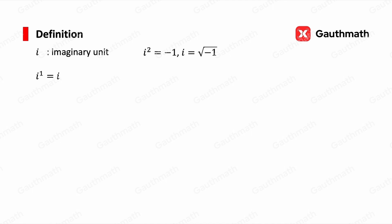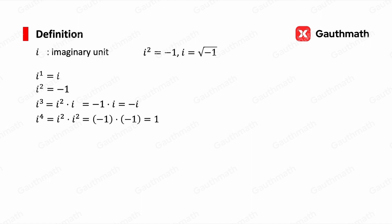We can compute several values. i to the power of 1 is i itself. i squared, as we know from the definition, is negative 1. i cubed we can write as i squared times i, so that is negative 1 times i, which is negative i. And i to the power of 4 we can write as i squared times i squared, so that is negative 1 times negative 1, which is 1.